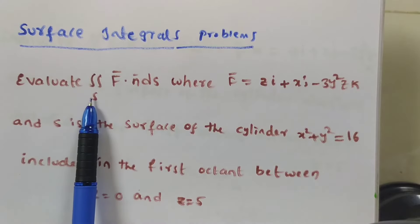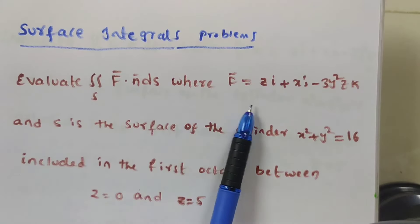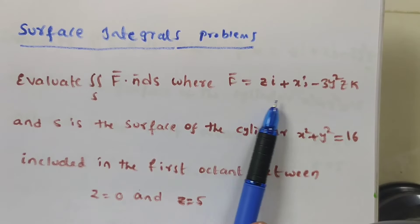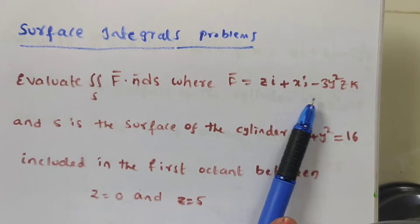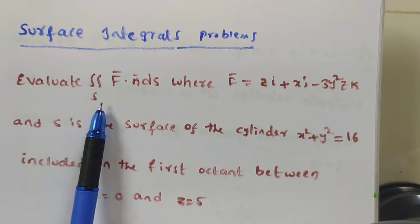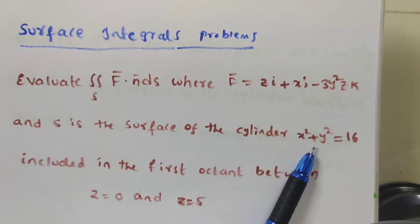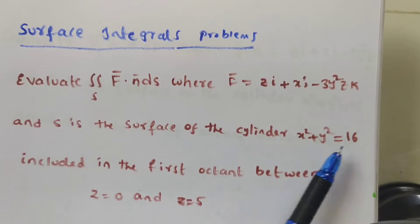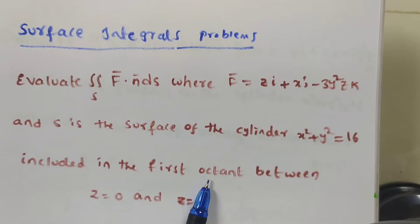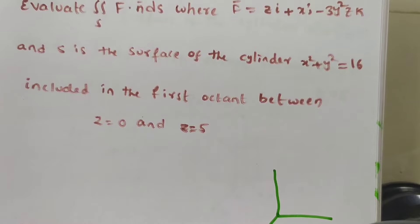The given problem is: evaluate the double integral over S of f̄ · n̄ ds, where f̄ = zi + xj - 3y²zk, and S is the surface of the cylinder x² + y² = 16, included in the first octant, with z from 0 to 5.